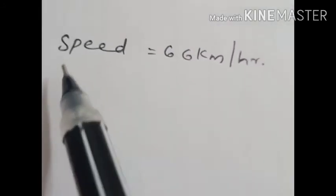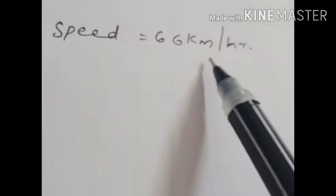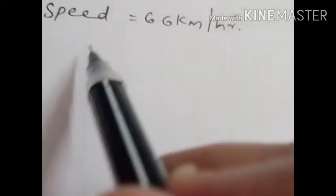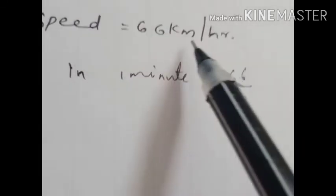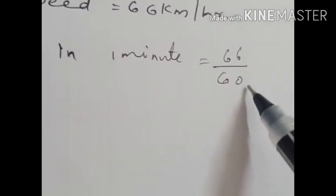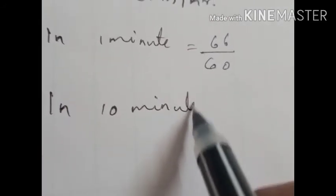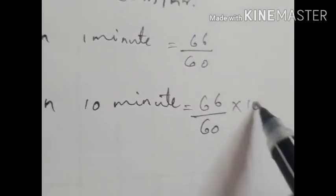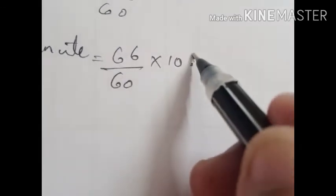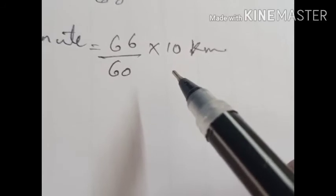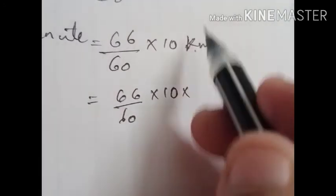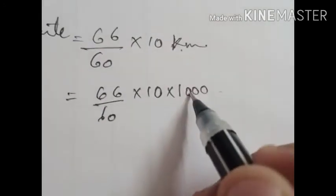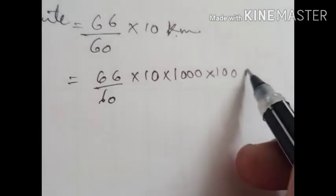Speed is given as 66 km per hour, meaning 66 km in 1 hour. To find distance in 10 minutes: 66 divided by 60 gives distance per minute, then multiply by 10. Converting to cm: multiply by 1000 (km to m) and by 100 (m to cm). So distance covered in 10 minutes equals 66 by 60 times 10 times 1000 times 100 cm, which simplifies to 11,00,000 cm.